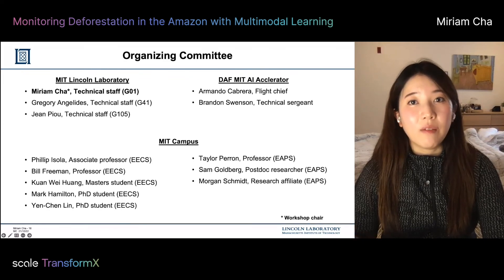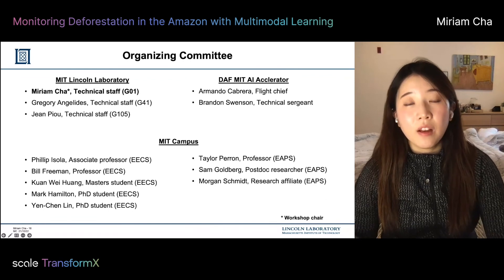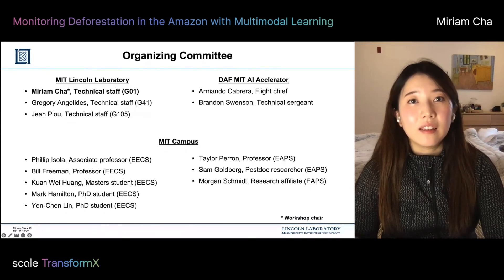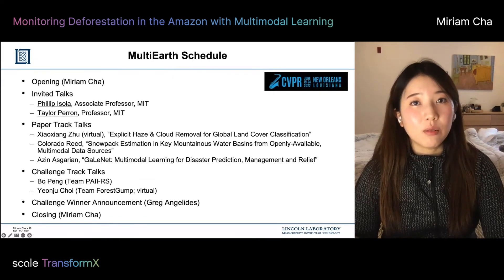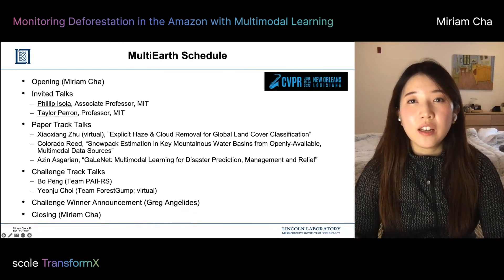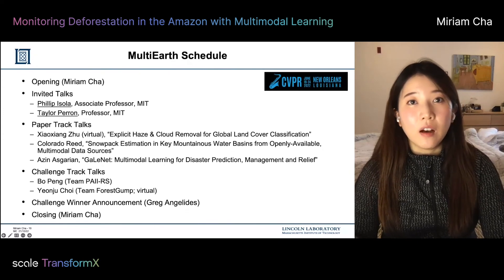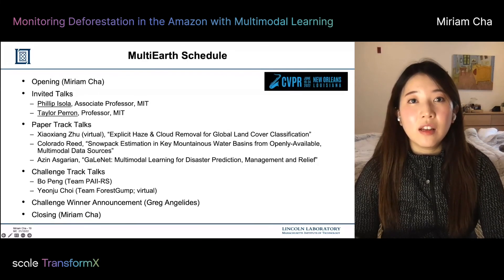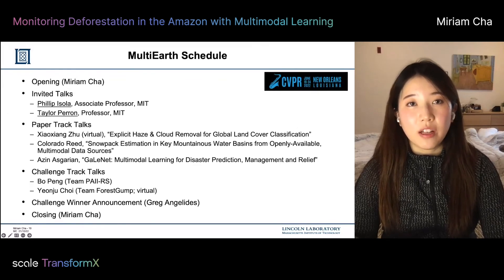The multi-Earth workshop organizers were from MIT Lincoln Lab, AI Accelerator, and MIT campus, spanning different groups and departments. For MIT campus, professors came from ECS and Earth and Planetary Science. Our workshop was a great example of successful collaboration between MIT Lincoln Lab, MIT Campus, and the Department of the Air Force. The schedule included opening remarks, keynote talks by Professor Philip Isola on hallucinating multi-view data for computer vision, and Professor Taylor Perron on multimodal remote sensing and environmental history in the Amazon, followed by oral presentations, challenge submission overviews, and award ceremonies.